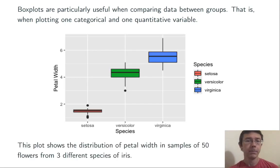Here's an example using the famous iris data set. What we have here are 50 observations of each of three species of iris. And here, I've plotted the width of the petals of each of those flowers.